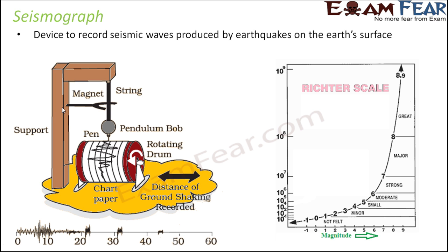Seismographs are connected to bed rocks rather than buildings, since buildings can collapse and would not give accurate values. At the same time, we do not want the instrument itself to shake too much, because if the seismograph is shaking too much then the accuracy of the measurement will not be great.